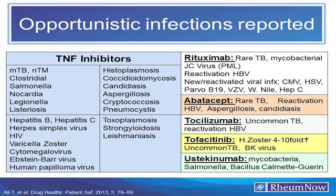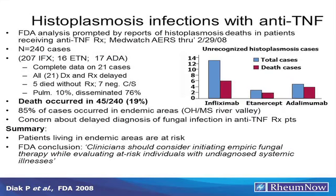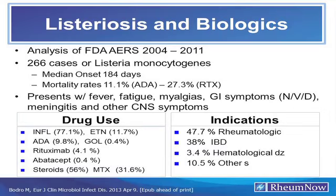There is a high rate of death with opportunistic infections, often because they are not considered. You are at greater risk if from an endemic area. The FDA recommends considering empiric antifungal therapy in at-risk individuals with undiagnosed systemic illness, since most patients who die of fungal infections receive no therapy before autopsy. Listeria cases have been associated with biologic use — 77% with infliximab — and most indications were rheumatologic. Background steroid and methotrexate use were common.